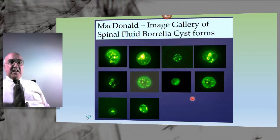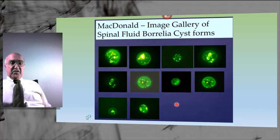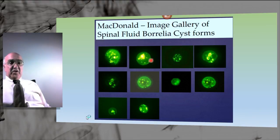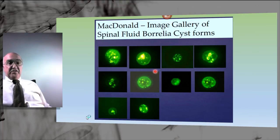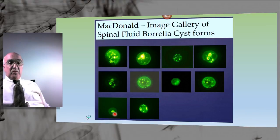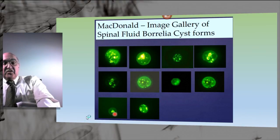Here is an atlas of cystic forms or round body forms obtained from a culture of spinal fluid from a patient who had borreliosis infection of the spinal fluid and very severe pain involving the nerves supplying the arm and chest. After 12 months of incubation, these cystic forms or round body forms emerged. Some have small granular material; some have larger content that stains more intensely, reminiscent of the nucleus-like structure shown earlier. There are all sorts of different patterns, including a triangular form within a cystic round body spirochete.